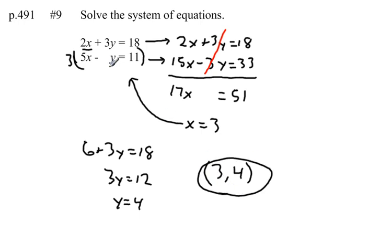We can always check our solutions by plugging them back in here. 2 times 3 is 6. 3 times 4 is 12. 6 plus 12 is 18. So that point works for the top equation. 5 times 3 is 15 minus 4 is 11. The point works for the bottom equation. It's the one and only point that will work for both of these equations.